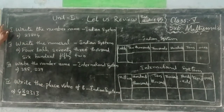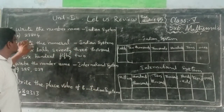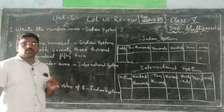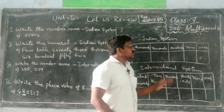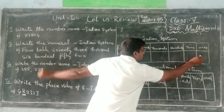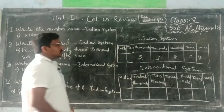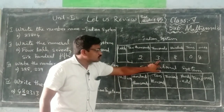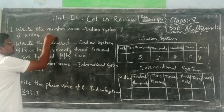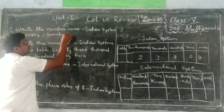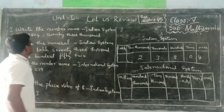Your first bit is: write the number name in the Indian system. Your A bit is 23,804. The given digits are 23,804. First we have to specify that in our Indian system you have to write the digits. 23,804 — that is the one you have to write.